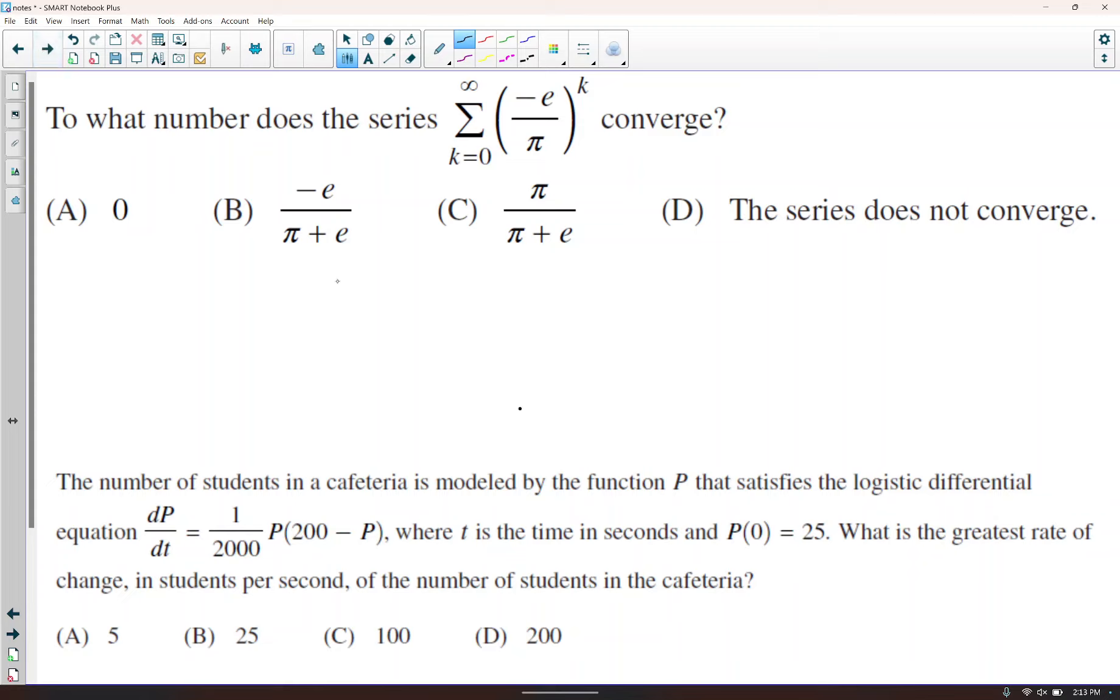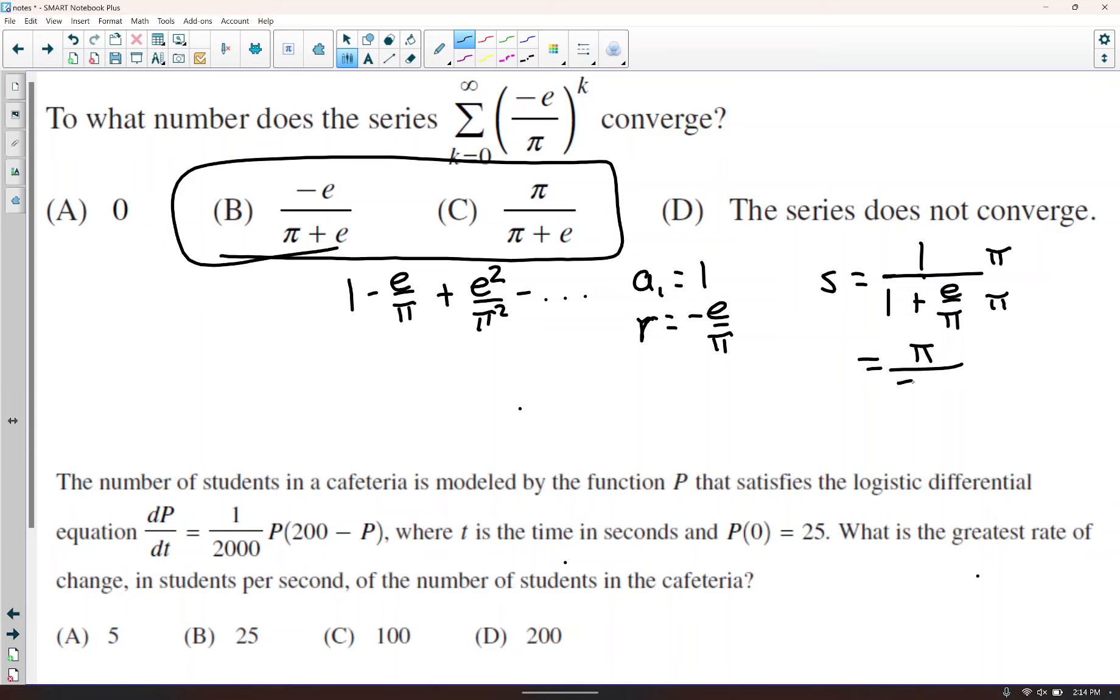What number does this series converge to? This is a geometric series. If you plug 0 in for k, you get 1, and then minus e over pi, and then plus e squared over pi squared, and so on. So a sub 1 is equal to 1, and then the r is equal to negative e over pi. So the sum is equal to 1 over 1 minus r, but that'd be 1 plus e over pi. So really, I think the choices right now are probably these two, and they've gotten rid of the complex fraction. So we're going to multiply the top and bottom by pi. So we get pi over pi plus e. Pi over pi plus e ends up being C.